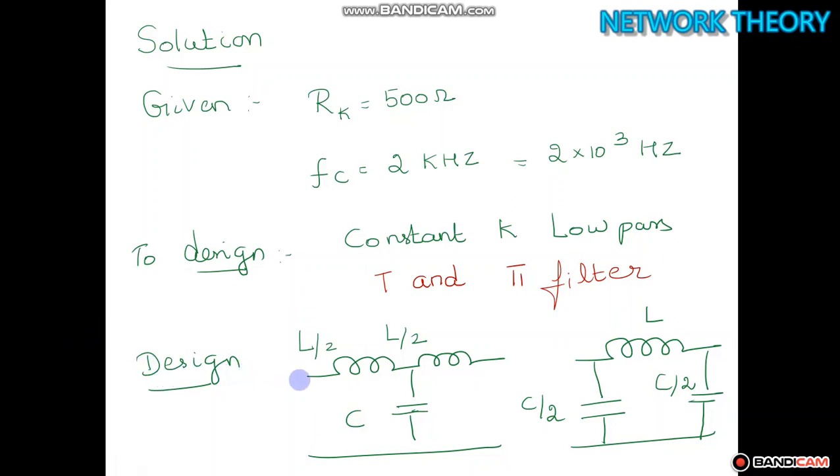Now first draw the diagram. For a low pass filter inductance will come in the series arm. So L by 2, L by 2 and C, and for the pi section L, C by 2, C by 2.